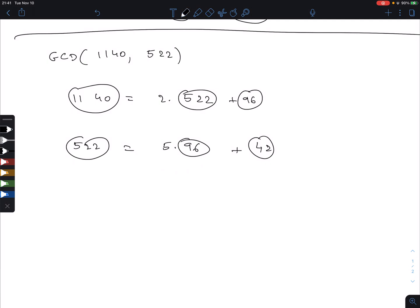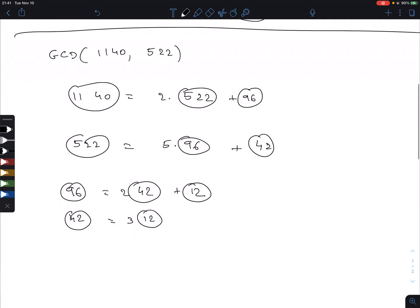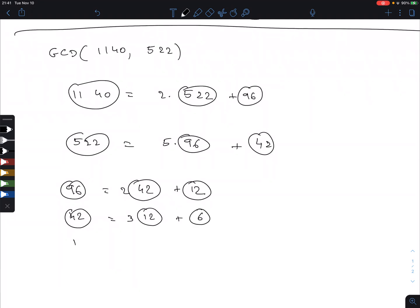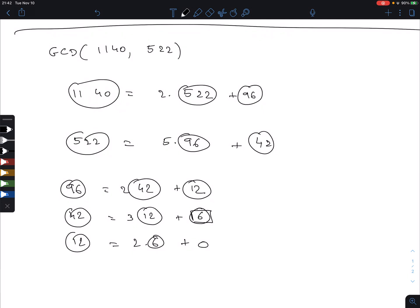Let's repeat this. 96 and 42. I can do 2 times 42, that is 84, and then I'm missing 12. Then I do 42 and 12, 3 times, that's 36 plus 6. And then finally, I do 12 and 2 times 6 plus remainder 0. So this tells me that this guy is the GCD.